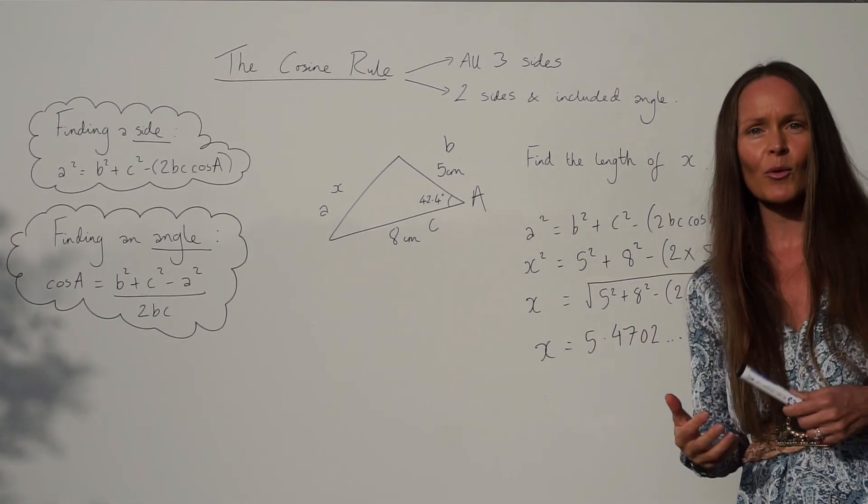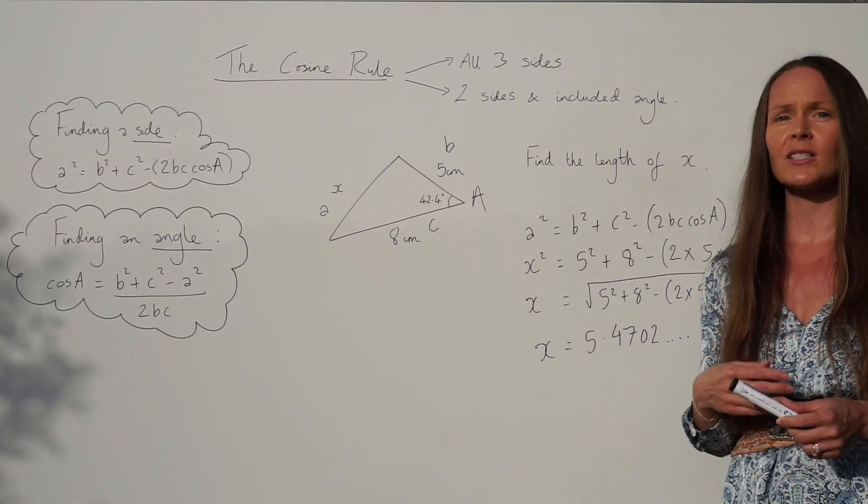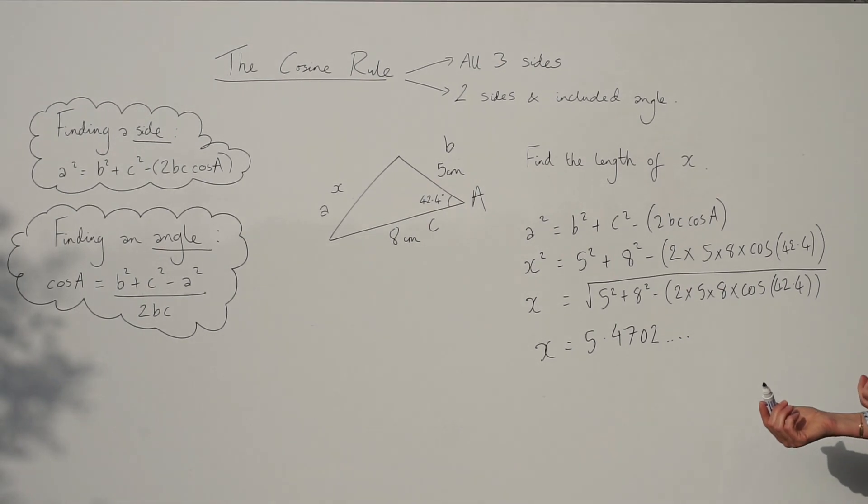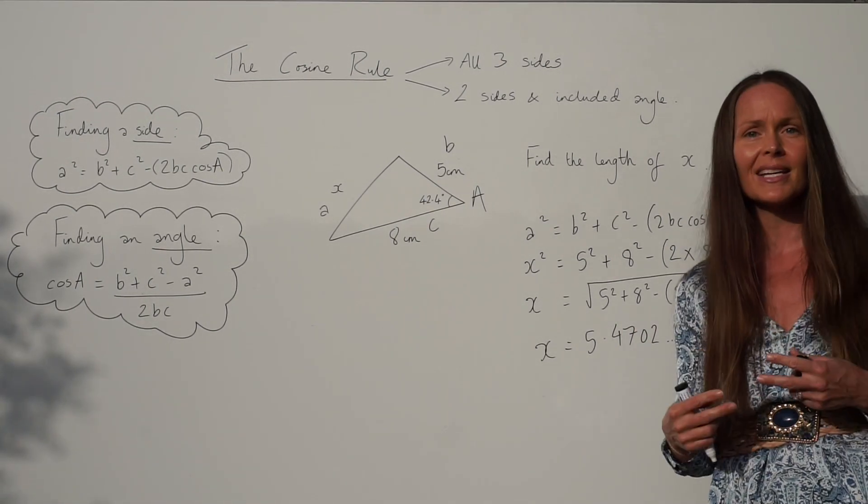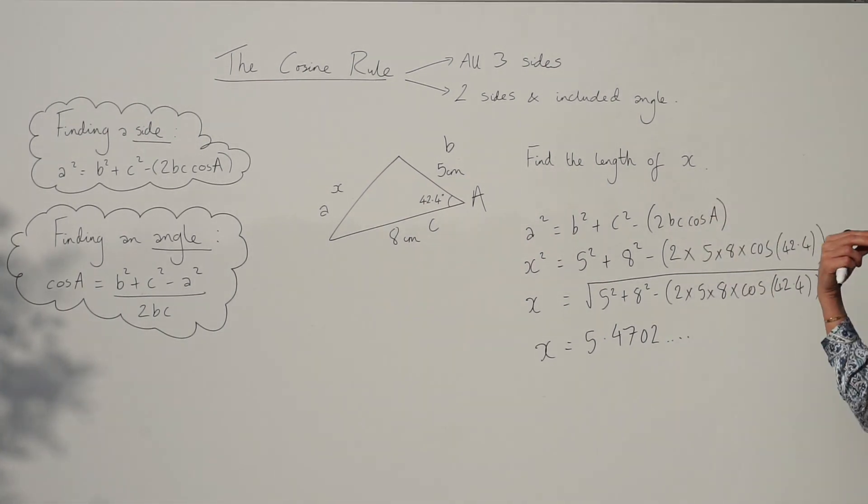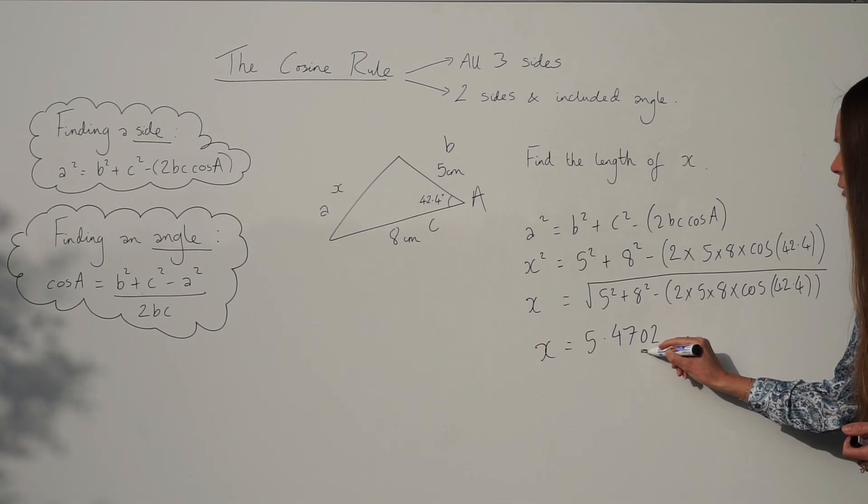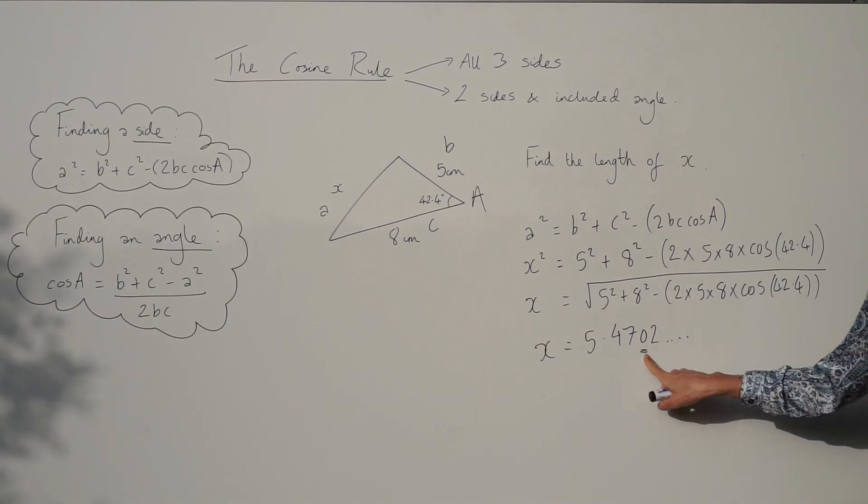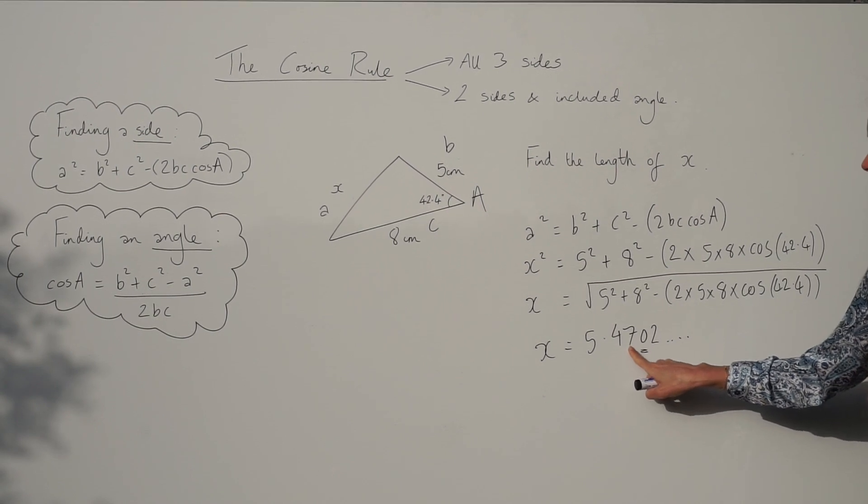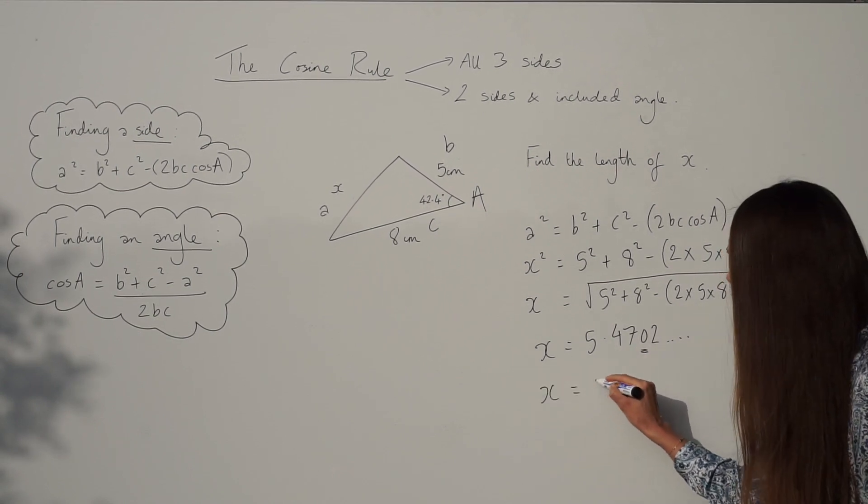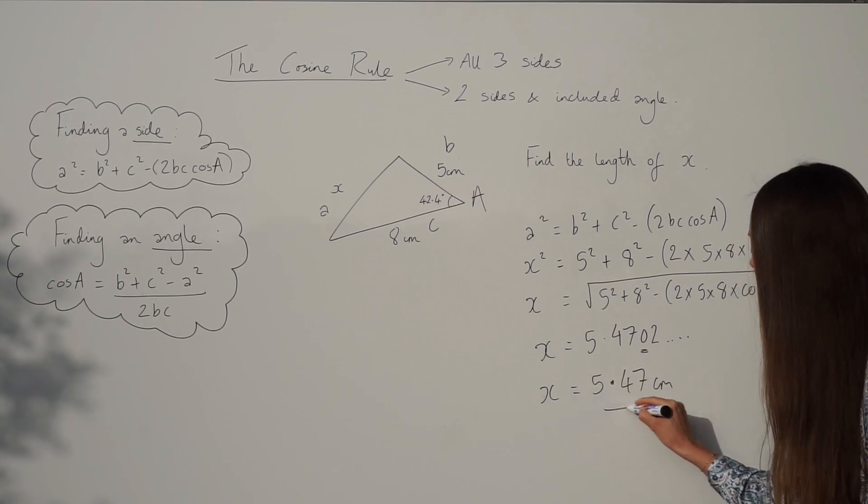Now just read the exam question carefully that you've been given to find out how you're expected to round your answers. Usually with the exam board that I use with my students, we round answers like this to 3 significant figures. So I want 3 numbers in my answer: 1, 2, 3. Usually if I check the 4th one, because this is smaller than 5, it doesn't round this digit up. Okay, it stays the same. So the final answer, the length of X is 5.47 cm.